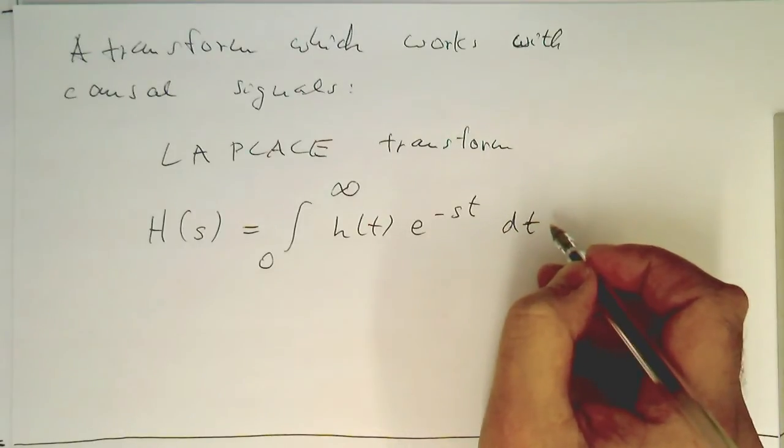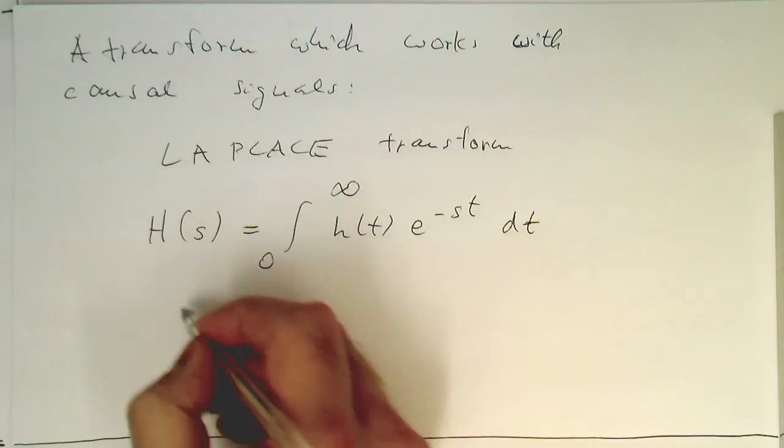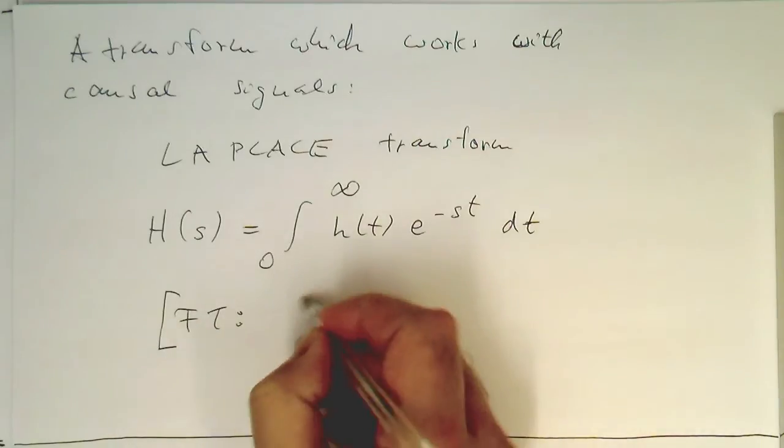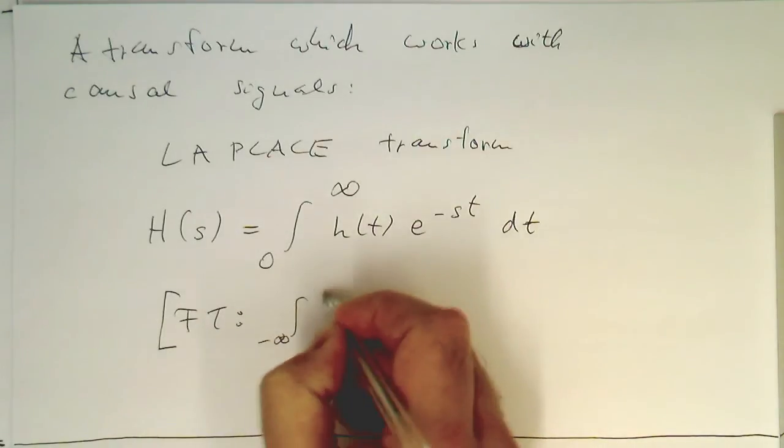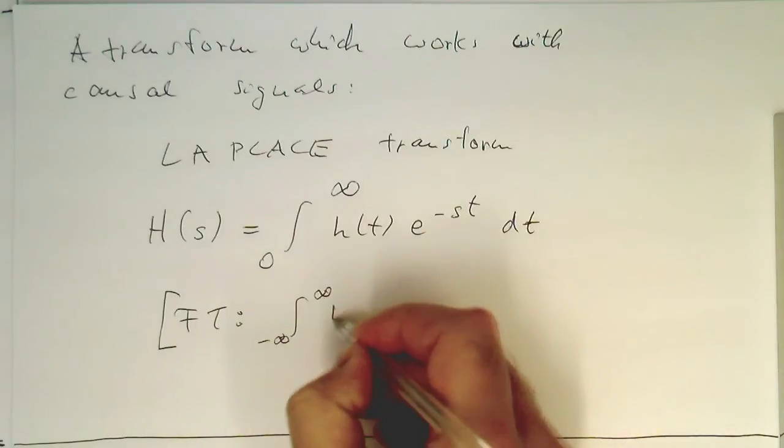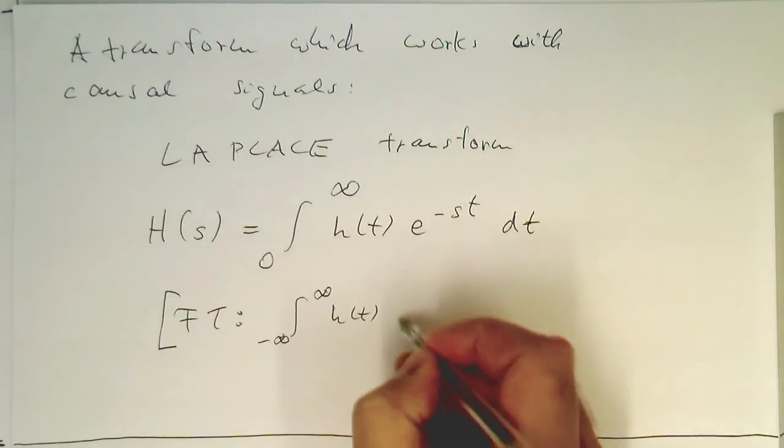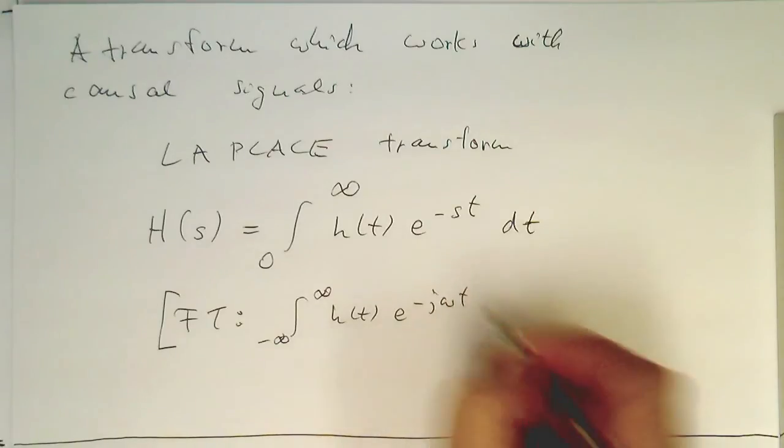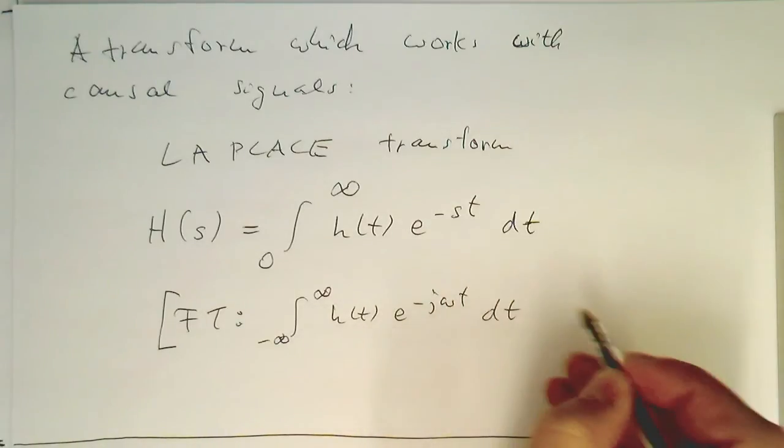If we compare this to our Fourier transform, the Fourier transform runs from minus infinity to plus infinity, with h of t times e to the minus j omega t dt.